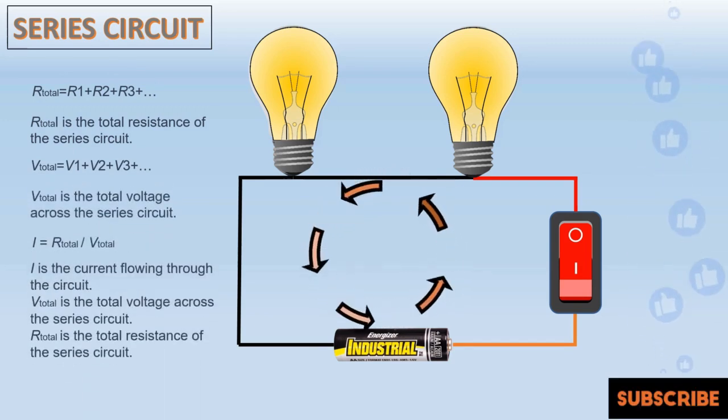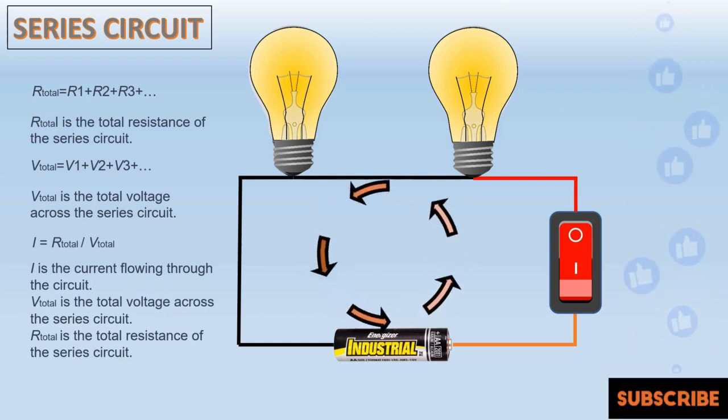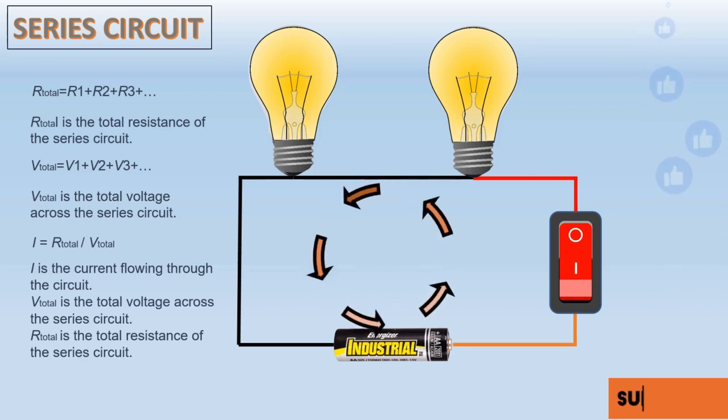The current remains constant throughout the circuit. This means that the current passing through one component is the same as the current passing through every other component in the series.